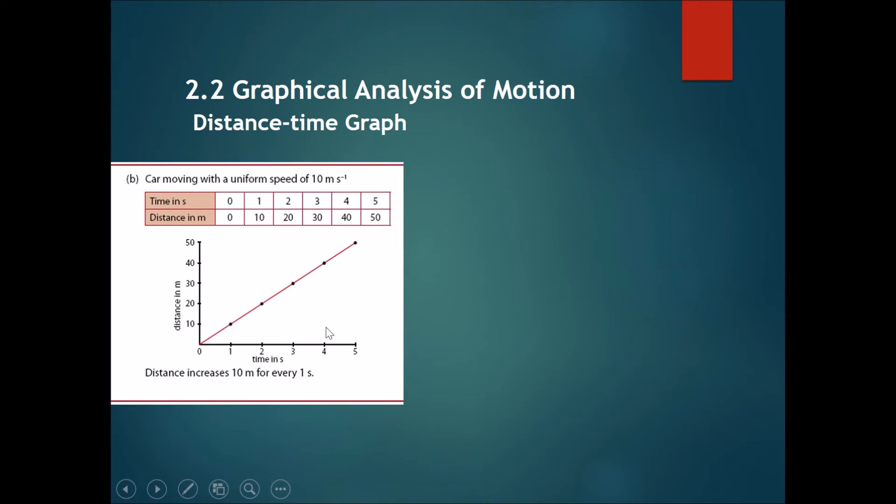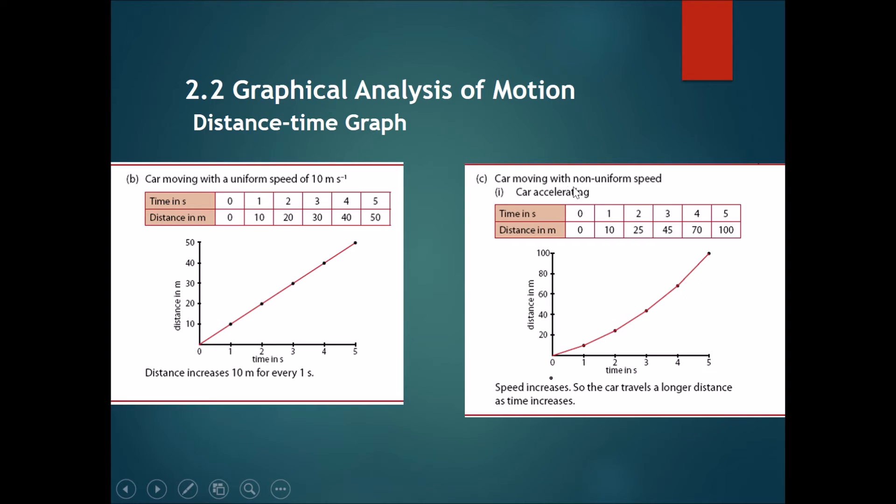So now we're going to compare the graph with uniform speed to this graph where the car moves with a non-uniform speed. This is the graph of where the car is accelerating. Acceleration means that it is increasing its speed with every second. So you can see here that first, from 0 to 1 second, the change in distance is only 10. However, from 1 to 2 seconds, the change in distance is 25 minus 10, which is 15. From 2 seconds to 3 seconds, the distance moved is actually 20. So you can see that the car is moving more distance in each consecutive second.